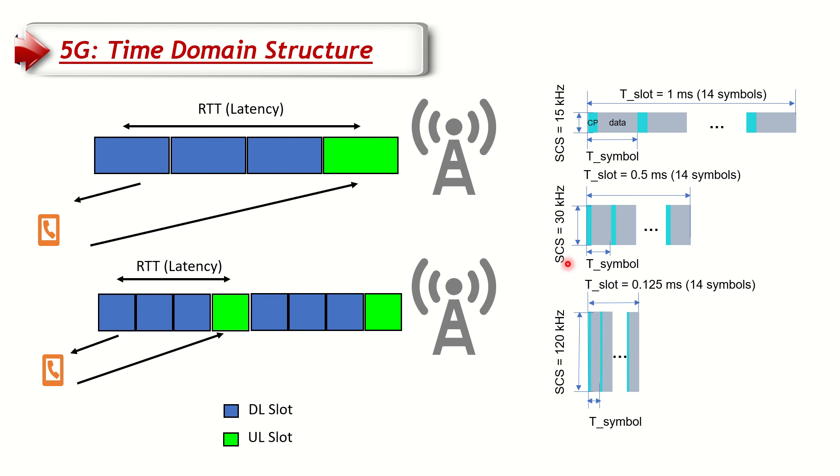Similarly, if we actually move to 120 kilohertz, we know that these slots will go to 125 microseconds or 0.125 milliseconds. The RTT can be reduced much further, it can even reduce four times compared to the 15 kilohertz. That is how we reduce latency in 5G by reducing the slot length and expanding the frequency.